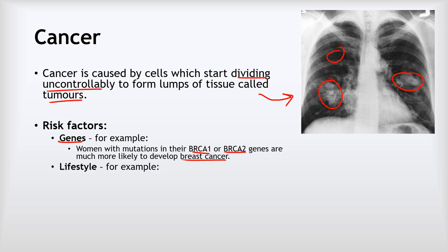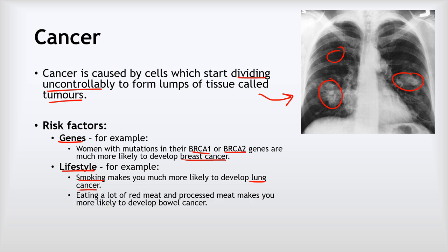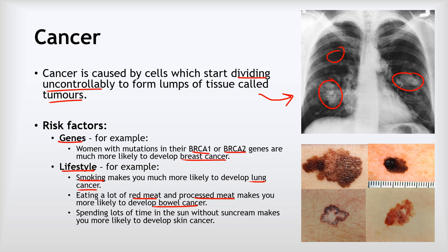The other set of factors for cancer are around lifestyle. Smoking makes you much more likely to develop lung cancer. Eating lots of red meat and processed meat like bacon, ham, and sausages makes you much more likely to develop bowel cancer. Spending lots of time in the sun without sun cream — or spending lots of time on sunbeds — makes you much more likely to develop skin cancer.